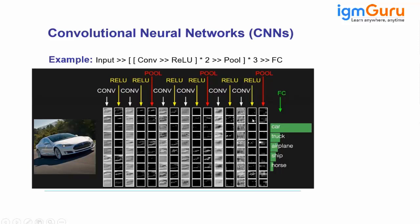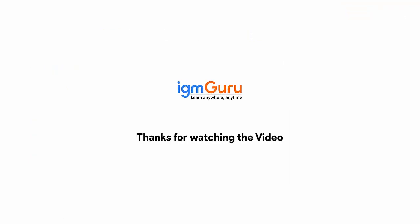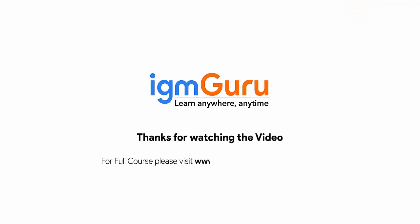If these minute features belong to a car, the model remembers that these features correspond to a car, and similarly for truck, and so on. Next time an image comes in, it goes through the same series to extract minute features, and then internally checks whether those features belong to car, truck, airplane, ship, or horse. This is how a convolutional neural network works. Thanks for watching — for the full course, please visit www.igmguru.com and enroll today.